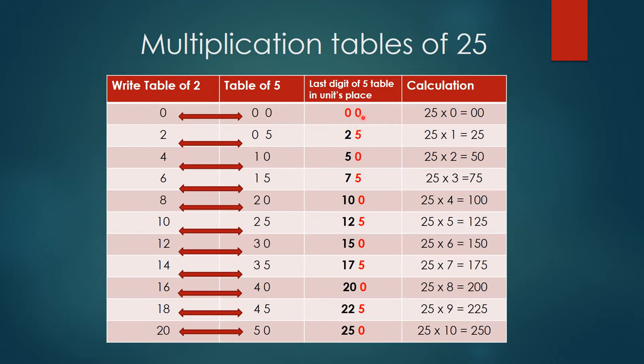So now actually what you have got here is nothing but table of 25. So let's see the calculation here. So 25 zeros are 0, 25 ones are 25, 25 twos are 50, 25 threes are 75, 25 fours are 100, 25 fives are 125, 25 sixes are 150, 25 sevens are 175, 25 eights are 200, 25 nines are 225, 25 tens are 250.